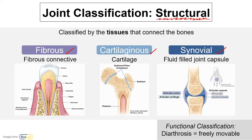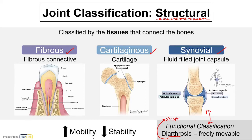The other major joint classification is functional, which is based on the range of motion of a joint. The most common of these is a diarthrosis — 'arth' referring to joint — and these are freely movable joints, so they often overlap with synovial joints. It's important to keep in mind that the more mobile a joint is, the less stable it is. The shoulder, for instance, is a synovial joint and a diarthrosis — it's the most mobile joint in the body but also the most unstable.